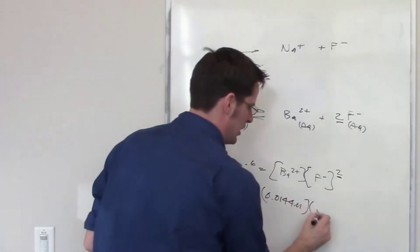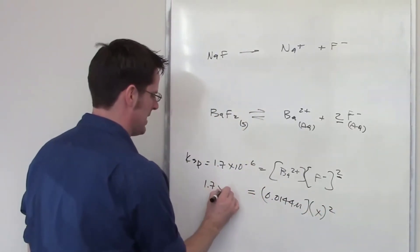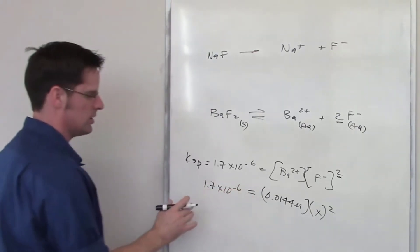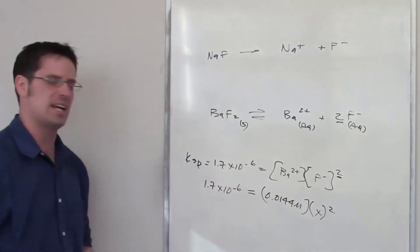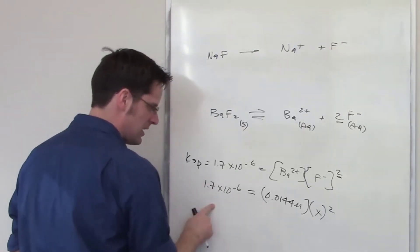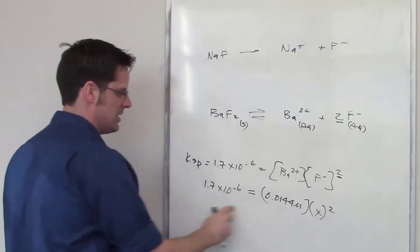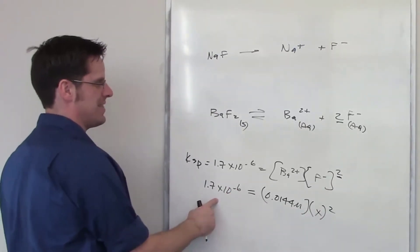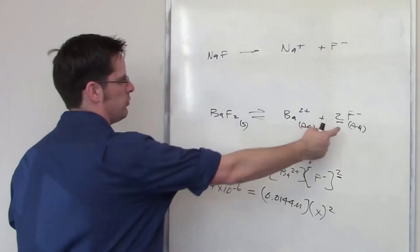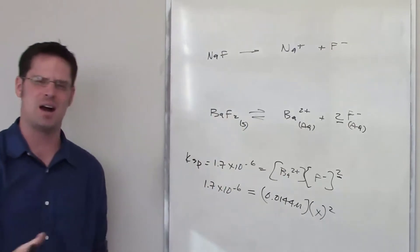That value, which I'll call x right here, is basically any value that ends up giving a number larger than this number, 1.7 times 10 to the negative 6. So really all I have to do is solve for x and then say any number that's larger than x will give me a larger value than Ksp and that will be too much fluoride to allow this to remain dissolved and we'll start to see this thing precipitate out.